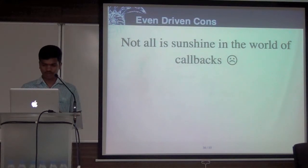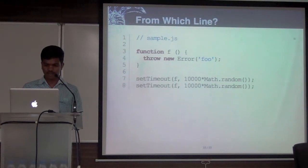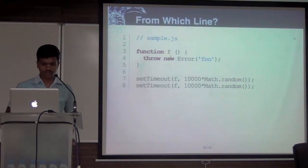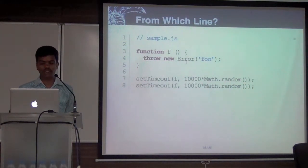But with this code comes a lot of bad parts. This is an example — I have a function called f. What I'm doing is simply throwing an error. In lines seven and eight, I'm creating two timeouts that go into Math.random.